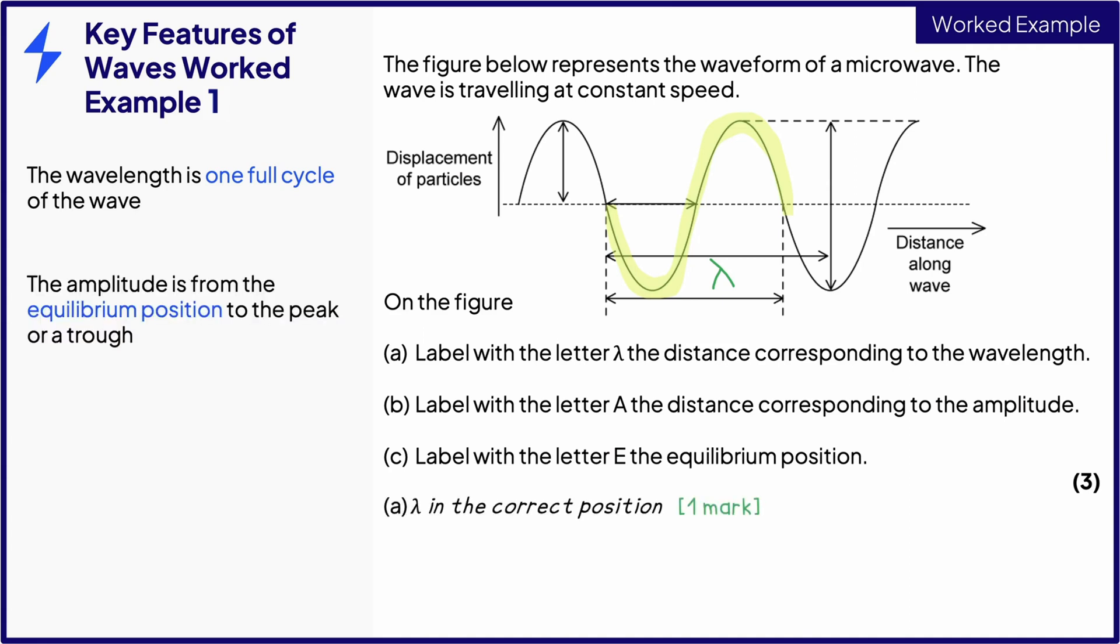For B, the amplitude is the distance from the equilibrium position to a peak or trough of a wave. Therefore, it should be one of the vertical arrows. The distance from the equilibrium position is here. So this is the second mark.